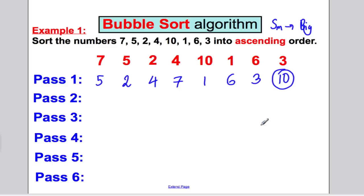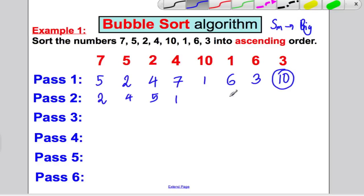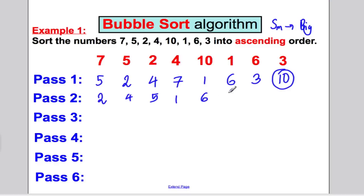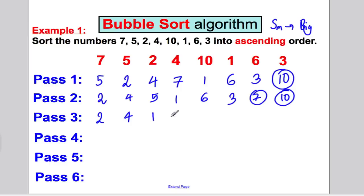Second pass: compare the first pair — swap, two there, think of five. Five and four — swap, four there, think of five. Five and seven — no swap. Seven and one — swap, one there, think of seven. Seven and six — swap, six there. Seven and three — swap, three there, and seven, the next biggest, is pushed to the end. Third pass: two and four — no swap. Four and five — no swap. Five and one — swap. Five and six — no swap. Six and three — swap, three there, six there. Next biggest has gone to the back.